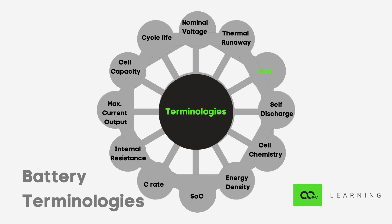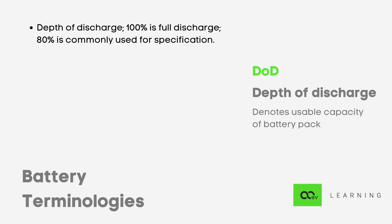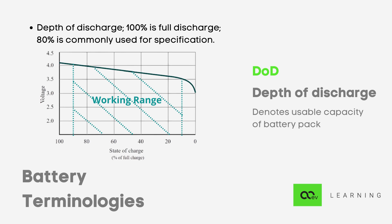Next is depth of discharge (DOD), which denotes the usable capacity of a battery pack. Typically, we use 80% DOD — meaning for a 10 ampere-hour battery pack, only 8 ampere-hours are used. This is achieved by limiting the working voltage range, excluding the top and bottom extremes as seen in the graph. A lower DOD results in higher cycle life and lower degradation.